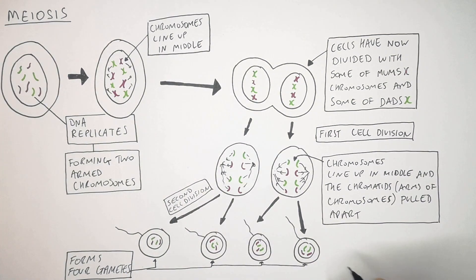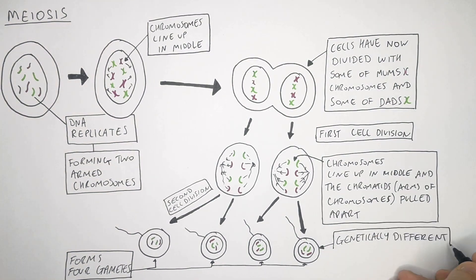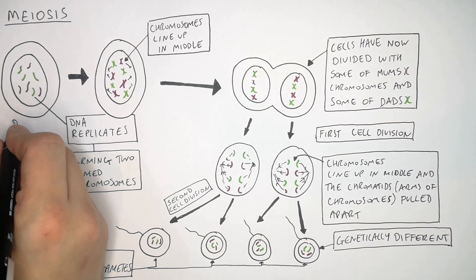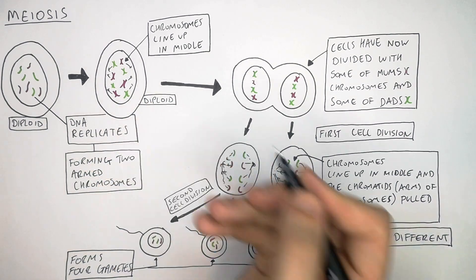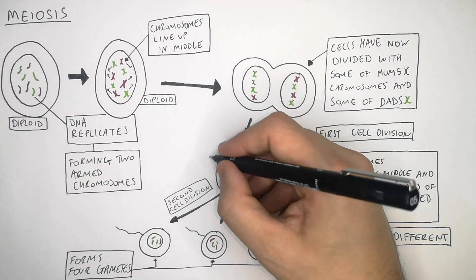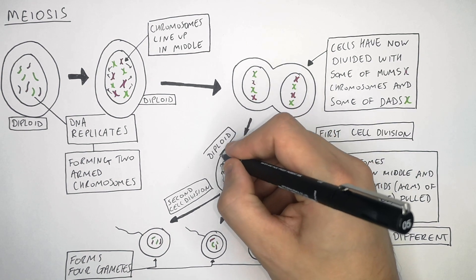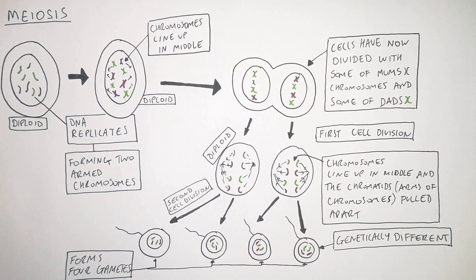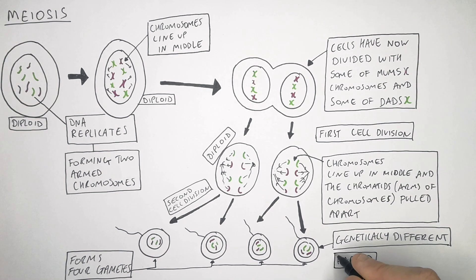So meiosis forms four gametes that are genetically different. You start off with a diploid cell with two sets of chromosomes. Because the DNA replicates and then is divided into two cells, the cell remains diploid after the first round of cell division. However, the gametes that are formed are haploid — they have got one set of chromosomes in them.